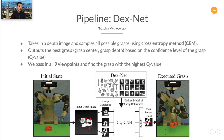Now let's talk about the grasp planning method, DexNet. In short, it takes in a depth image of the object and samples all possible grasps using the cross entropy method. Then it outputs the best grasp, which is specified by the grasp center and the grasp depth based on the confidence level of the grasp. What we do is pass in all nine depth images from nine viewpoints and find the grasp with the highest Q value.